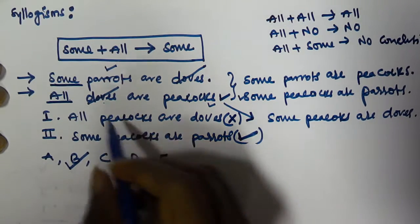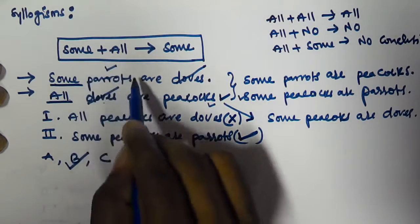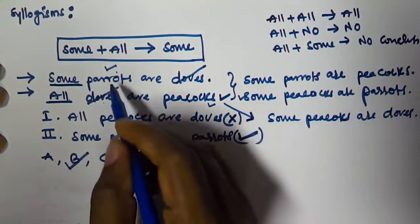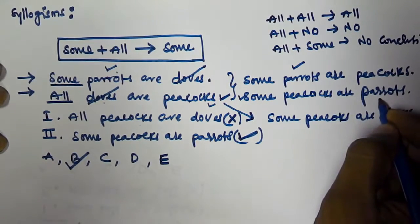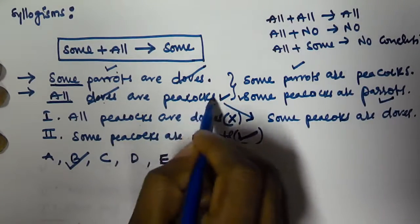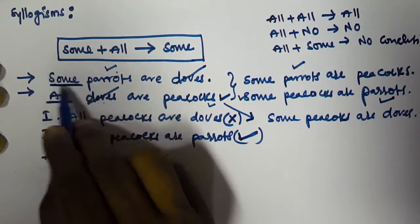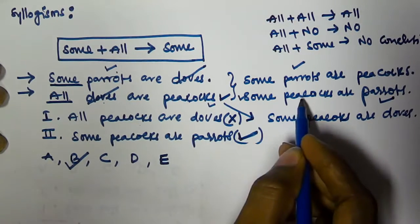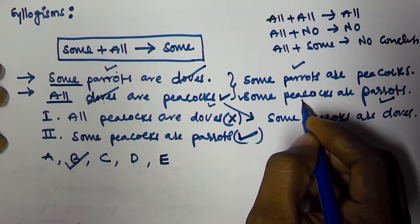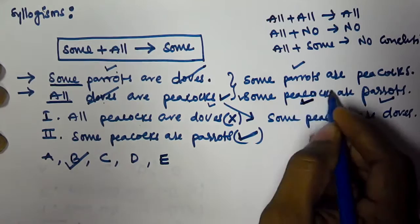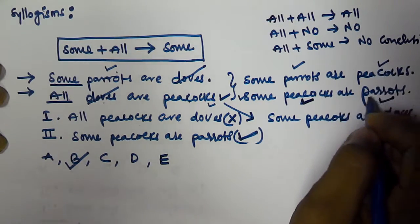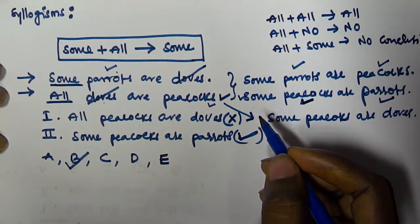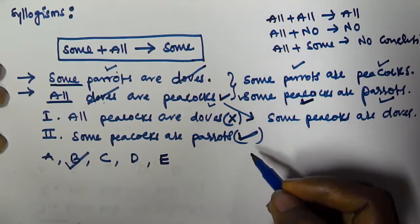To recap: whenever some plus all applies, you can take the subject of the first statement as the subject in the conclusion, or use the predicate of the second statement as the subject. So when some plus all is present, you can derive two conclusions. Thank you very much for watching this video — please subscribe to my channel.